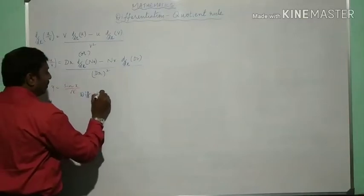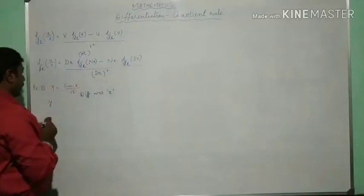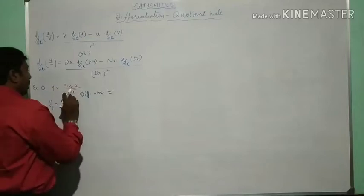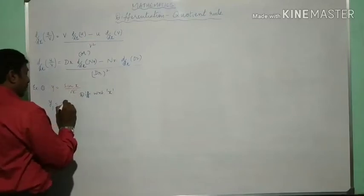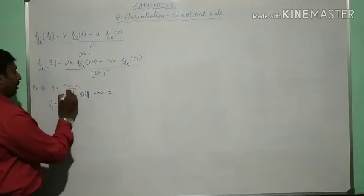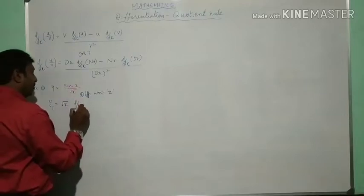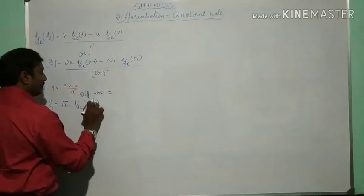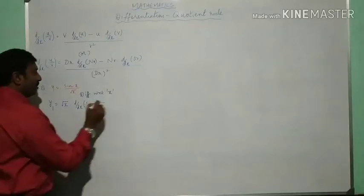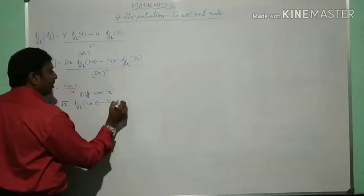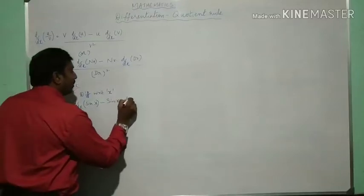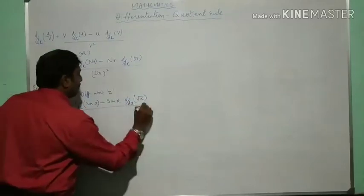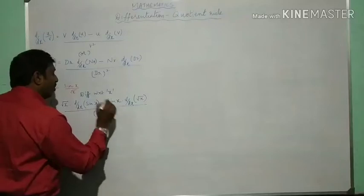Differentiate with respect to x. Here y prime is the first order derivative. I will take the denominator first as it is and d by dx of numerator, minus numerator as it is, and d by dx of denominator, all divided by denominator whole square.